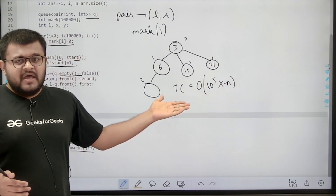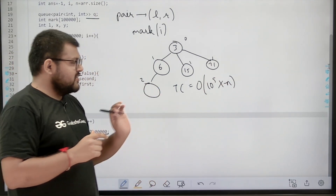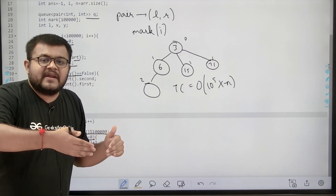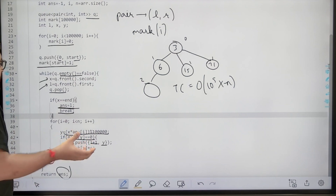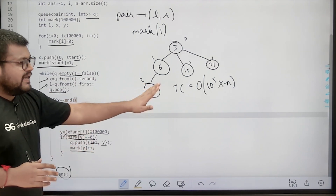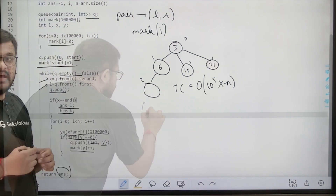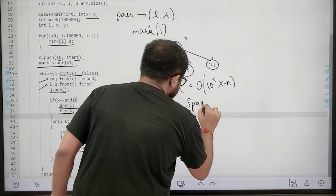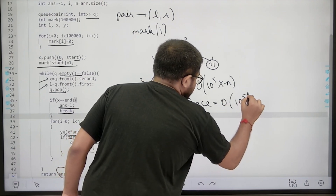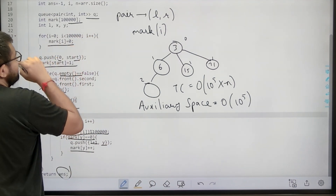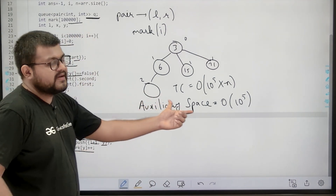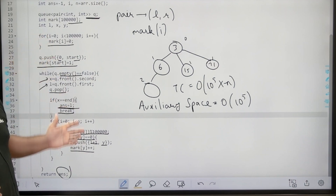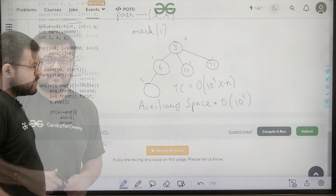This process ends when either the queue becomes empty — meaning all possible elements are generated and end was not reached, so we return minus 1 — or when x equals end. For time complexity, at most 10^5 elements can be in the queue, and for each we run a loop of size n, giving O(10^5 × n). However, due to modulo operations causing many repetitions, the actual runtime is much less. The auxiliary space is O(10^5) for the mark array and queue.